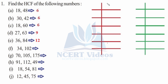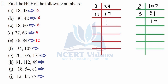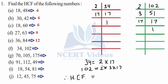Part f: 34 and 102. The prime factors of 34 are 2×17, and 17 is a prime number. For 102: divided by 2 gives 51, and 51 = 3×17, then 17 ones are 17. Here we have two common factors: 2 and 17. Pairing them up gives 2×17 = 34. So the HCF is 34 for part f.